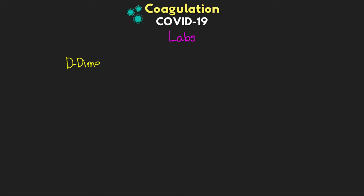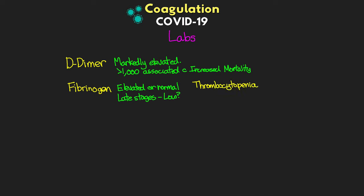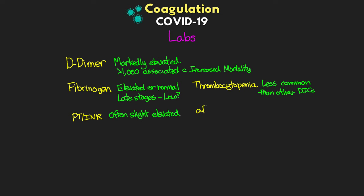The first lab is our D-dimer — we're seeing markedly elevated levels in COVID-19, and levels over 1,000 are associated with increased mortality. We also want to monitor fibrinogen, which is generally elevated or normal, though low levels may appear in late stages. Thrombocytopenia — low platelets — is also seen, though less common than in other forms of DIC. PT/INR is often slightly elevated, and APTT may be slightly reduced.